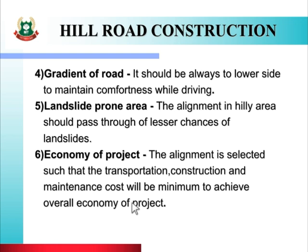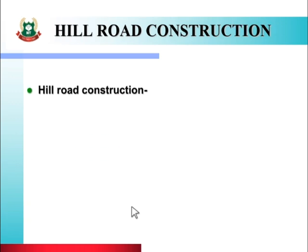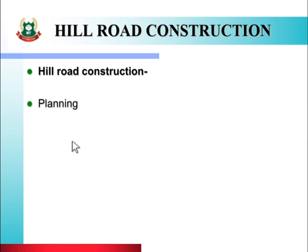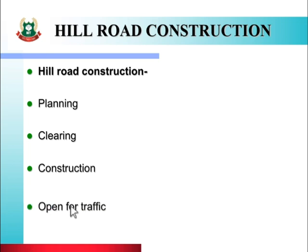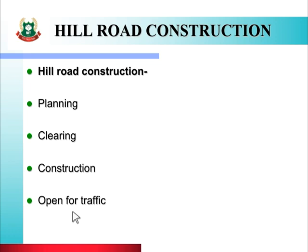These are the various factors which control the hill road alignment. Next, we will see the construction steps of a hill road, which include: planning, clearing, construction, and opening for traffic. For a hill road, the steps are: planning, budget approval, site clearance, construction, and after complete construction, opening for traffic. These are the steps used in hill road construction.